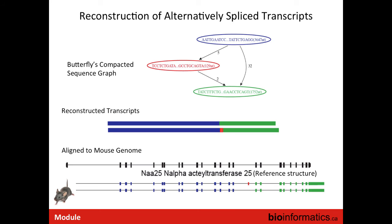As an example, we published work on the axolotl — the Mexican salamander — a model organism for limb regeneration. Its genome is huge, about 30 billion bases, 10 times bigger than the human genome, largely due to an ancient repeat expansion from mobile elements. We assembled the transcriptome and ended up with over 1.4 million transcripts, starting from over a billion RNA-seq reads. The axolotl is thought to have around 30,000 genes like human or mouse — the genome is just huge because of those repeats.